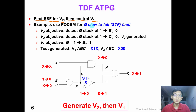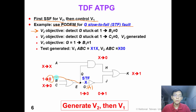Consider the following circuit. Let's generate a pair of test patterns for G slow-to-fall fault. In the second vector V2, the objective is to generate a single stuck-at fault test pattern for G stuck-at-1 fault. So we backtrace to input B and control B to 0 in vector 2. But this is not enough, so we backtrace again to input C and control C to 0 in vector 2. With this input, we generate a test pattern for G stuck-at-1 fault successfully.